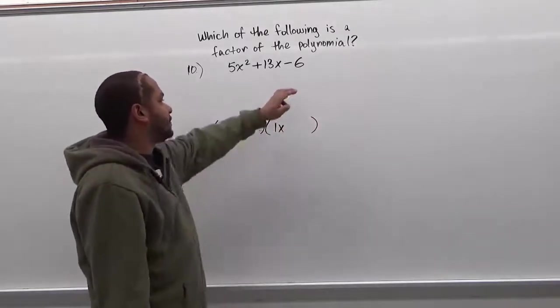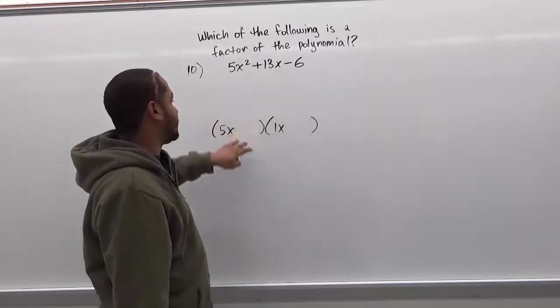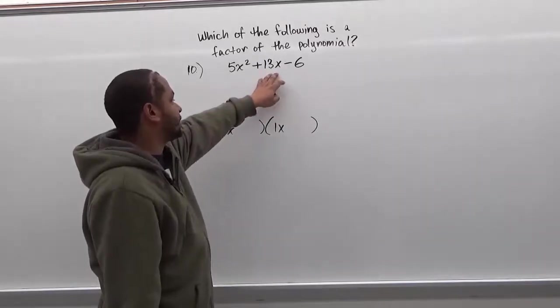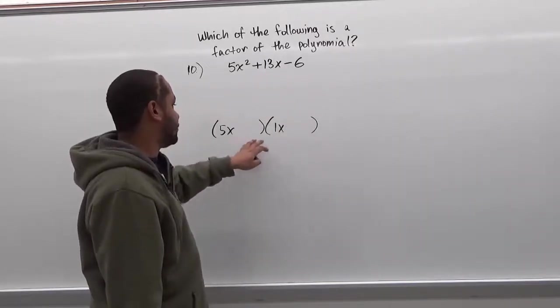And we're going to look at the factors of negative 6 as well so that we can find the combination that makes 13x when we do the FOIL of these two terms.